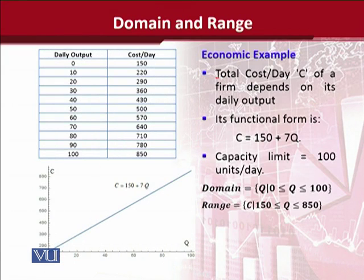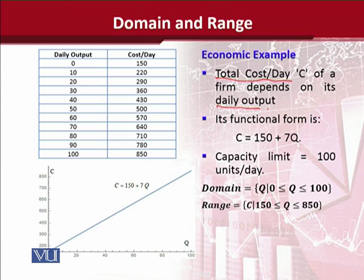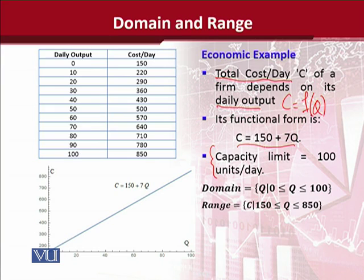Let's come to an economic example. This is a case where cost per day is calculated and it is dependent upon the daily output of the firm. In functional form, cost is a function of output. More explicitly, this equation shows that cost is equal to 150 plus 7 times q, or 7 times output. A caveat — the capacity limit means the firm can only produce 100 units on a daily basis, not more than that.